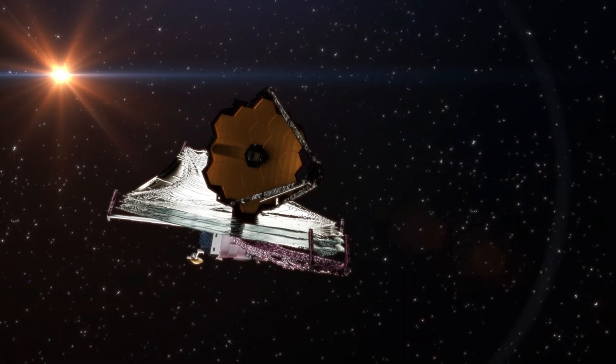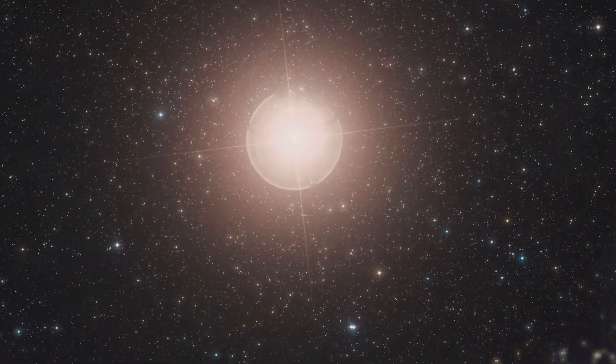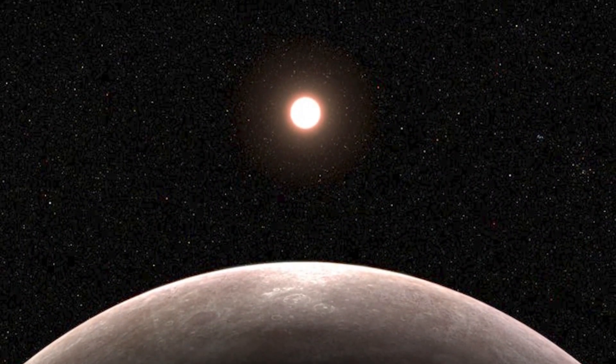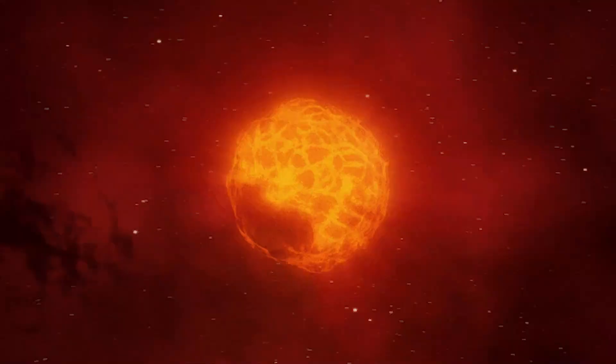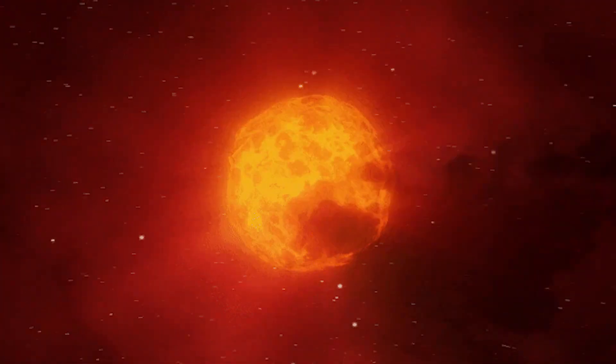Supernovae are very powerful events that release huge amounts of energy. As it moves through space though, the energy quickly fades away. The energy from Betelgeuse's supernova will have been greatly reduced by the time it gets to Earth. Scientists think that even a supernova that happened within 25 light years of Earth would not directly harm it.